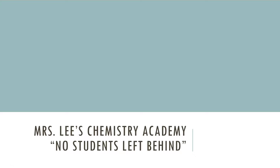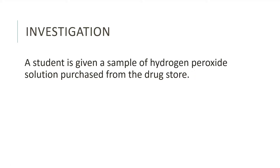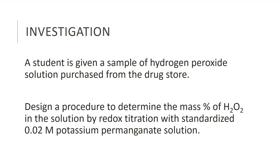Ms. Lee's Chemistry Academy, Lab 4: Determination of Percent of Hydrogen Peroxide by Redox Titration with Permanganate Solution. In this lab, a student is given a sample of hydrogen peroxide solution purchased from a drugstore. You then have to design a procedure to determine the mass percent of hydrogen peroxide in the solution by redox titration with standardized 0.02 molar potassium permanganate solution.